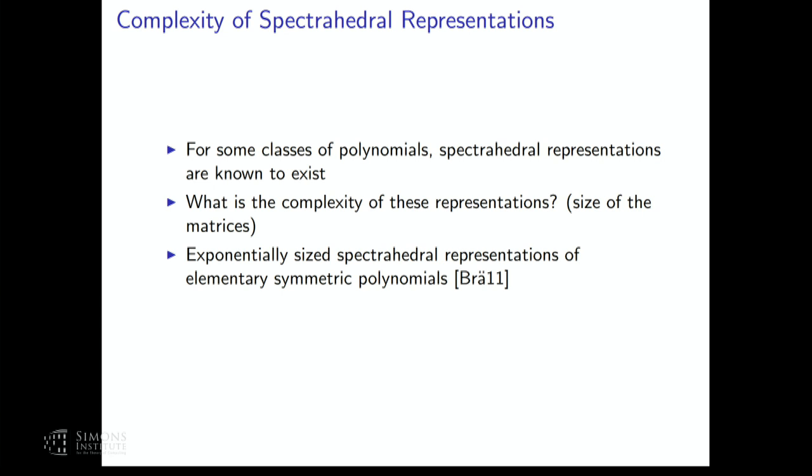An example: if you take the elementary symmetric polynomials, which I'll be talking about a lot in this talk, Brandini showed there's an exponentially sized spectrahedral representation for them. So the question is: what are the worst-case scenarios? If I give you a random hyperbolic polynomial, what do I expect the size of the spectrahedral representation to be? A spectrahedral representation is a bunch of matrices where I can write the hyperbolicity cone as the hyperbolicity cone of the determinant of the sum x_i A_i. By complexity, I mean the size of these matrices — what's the smallest matrices I can find to encode this geometric object?